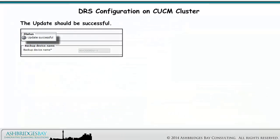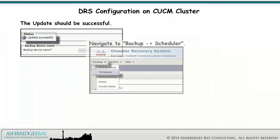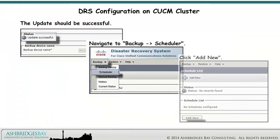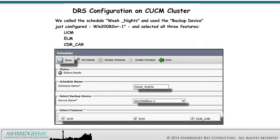The update should be successful. Navigate to Backup > Scheduler. Click Add New. We called the schedule "weeknights" and used the backup device just configured — Windows 2008 Server 1 — and selected all three features: UCM, ELM, CDR/CAR.